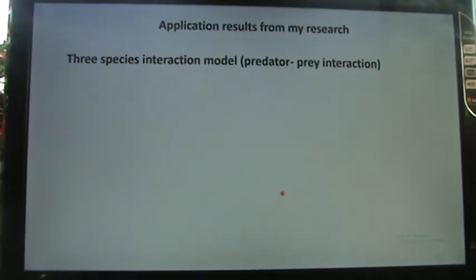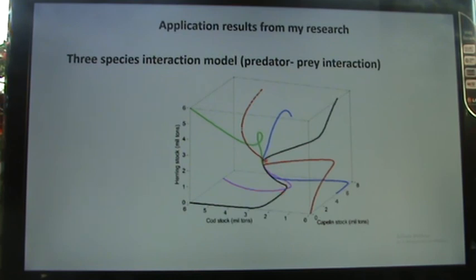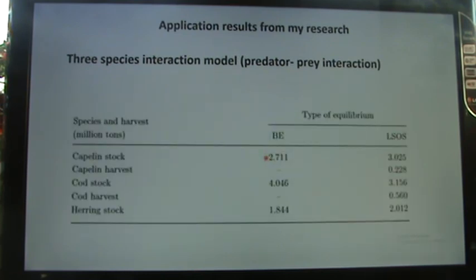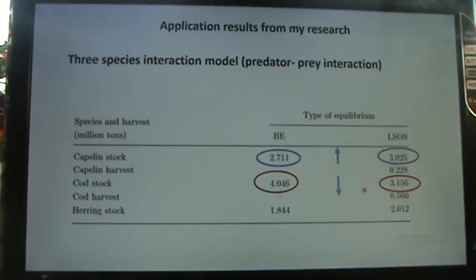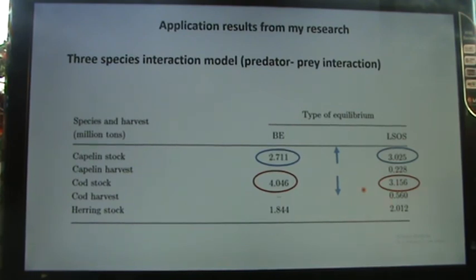In the multi-species model, the bio-ecological equilibrium without harvest shows cod at one level, with capelin and herring at their respective levels. When cod is harvested, cod stock declines, which increases the sustainable equilibrium biomass for capelin and herring — because with fewer cod predators in the system, prey species recover.